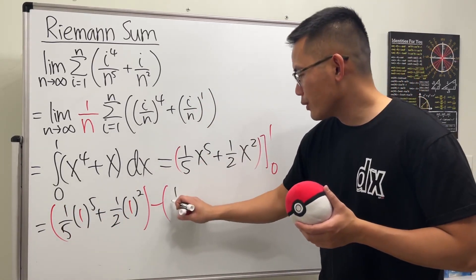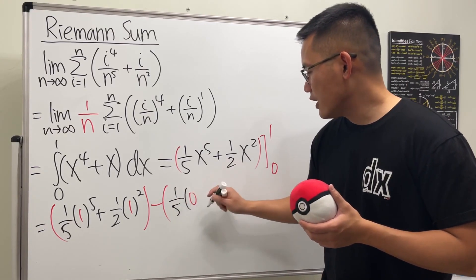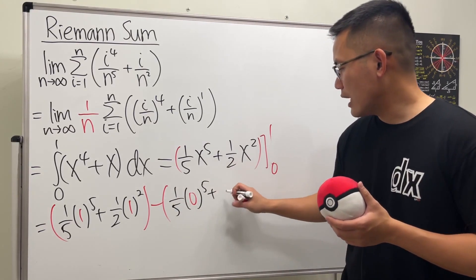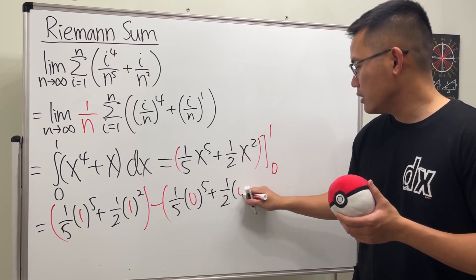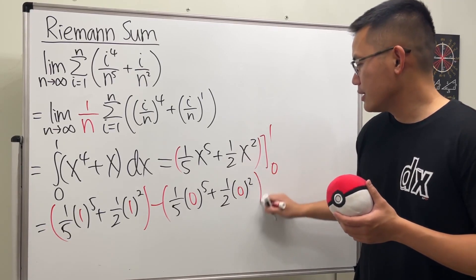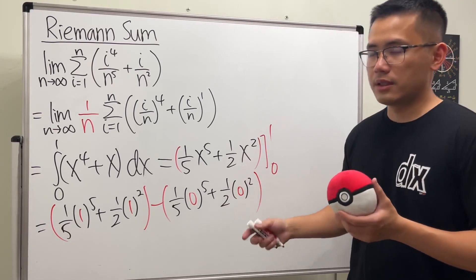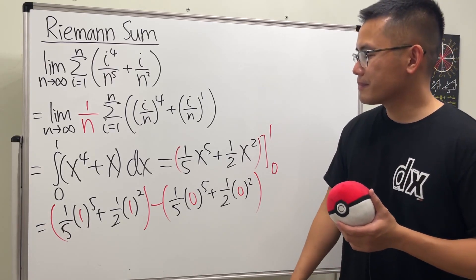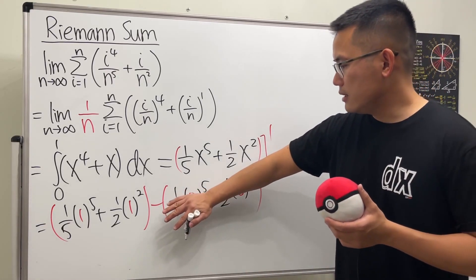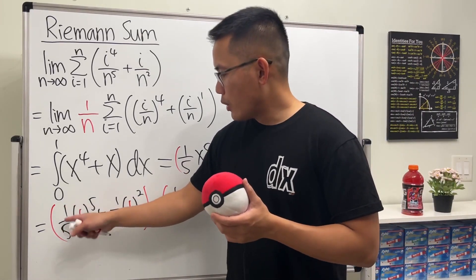And then minus, plug in zero. I know it's all going to be zero, but I will still set it up for you guys just to have a good habit, especially sometimes when you plug in zero you may end up with some number. That's good habit. All right, so this is indeed equal to zero, and now we just have to add the fractions: one over five plus one over two.